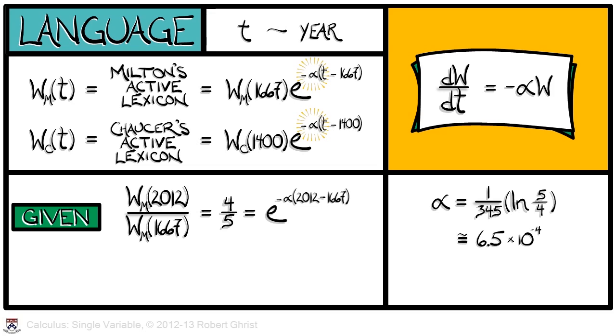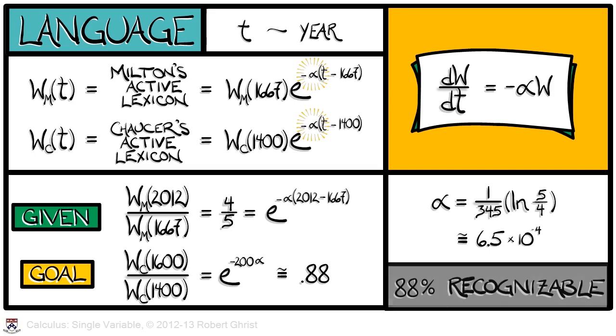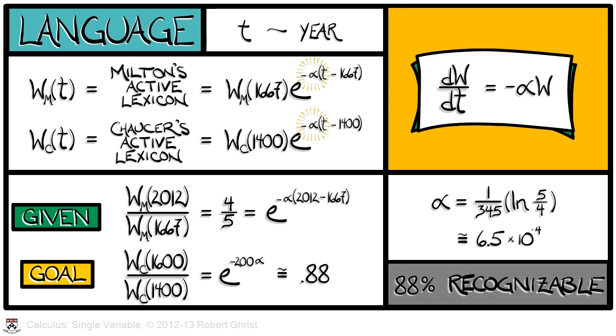Now, if we use that alpha in our solution for W sub C of T, then what can we get? Well, our goal is to find the fraction of words from Chaucer's time that people in Shakespeare's time would have understood. That is WC of 1600 divided by WC of 1400. Plugging in our solution to the differential equation for W sub C gives us an answer of e to the negative 200 alpha. Since we know alpha, we can compute it. It's about 0.88, meaning that about 88% of Chaucer's words would have been recognizable to Shakespeare's audience. Well, that's pretty cool.